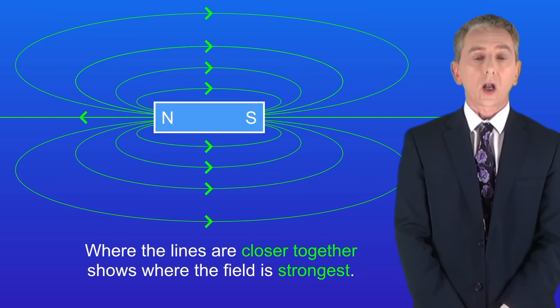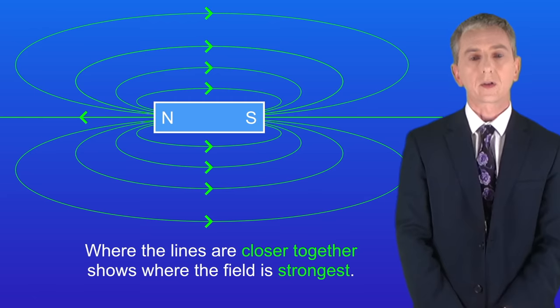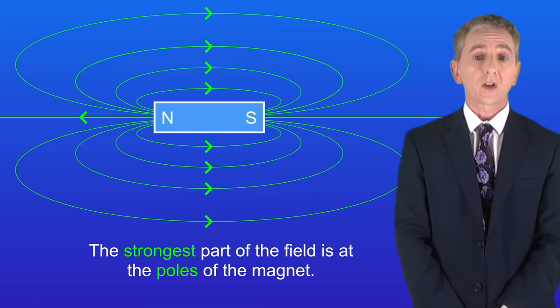Where the lines are closer together shows where the magnetic field is strongest. And as we said before the strongest part of the field is at the poles of the magnet.